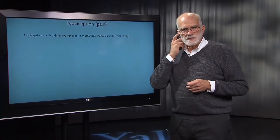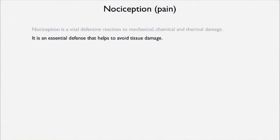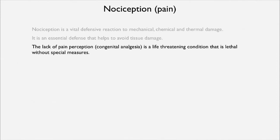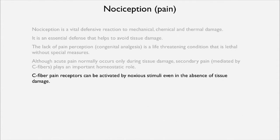Then there's the defense mechanism we call pain, or nociception. It's a vital response and it can respond to mechanical, chemical, and thermal damage. It's essential to avoid tissue damage, and we see this most clearly in people who lack pain perception — that is a life-threatening condition called congenital analgesia. Without special measures it will be lethal, because people just won't notice when they're getting damaged. Secondary pain, mediated by C fibers, plays a very important homeostatic role, and C fiber pain receptors can be activated by a noxious stimulus even in the absence of tissue damage.